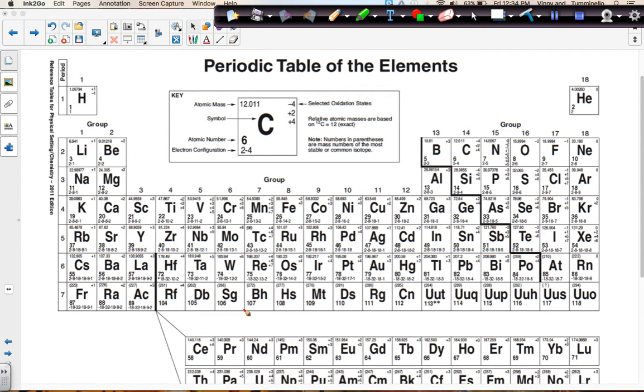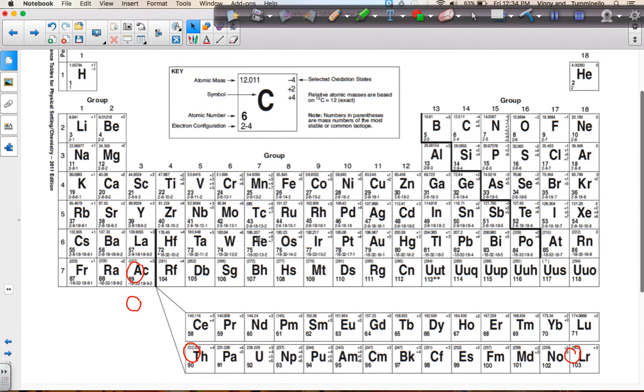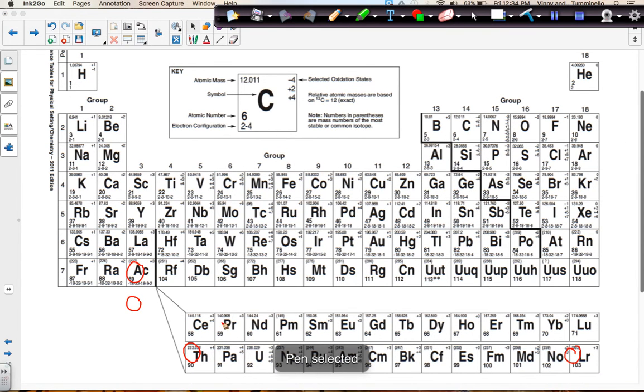If we look down here, notice that this is element 57. This is where 58 through 71 are shown. Those are called the lanthanide series. This is element 89, and down at the bottom here we can see elements 90 to 103. So those continue down at the bottom.